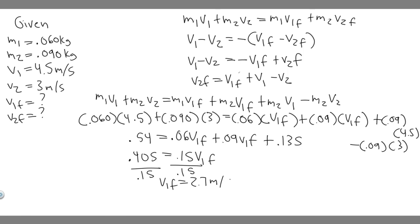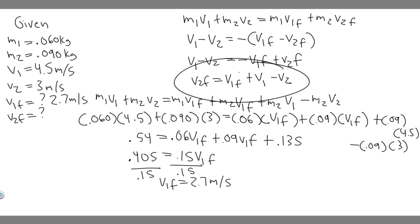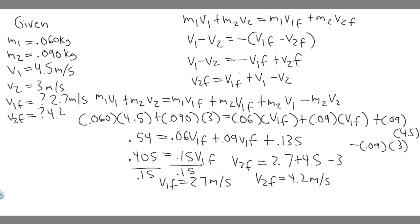So 2.7 meters per second is the final speed of the first ball. Now we find V2 final using V2F equals V1F plus V1 minus V2: that's 2.7 plus 4.5 minus 3, which equals 4.2 meters per second. Both values are positive, meaning both balls are traveling in the same direction after the collision.